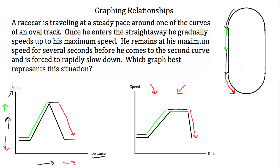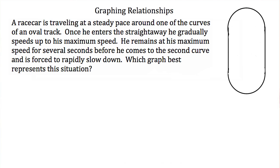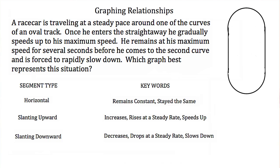Now there are several key words that let us know what was happening along the course. These words are steady pace, gradually speeds up, remains at, or rapidly slowed down.